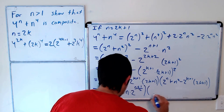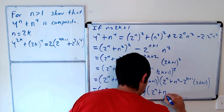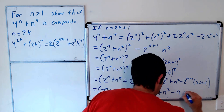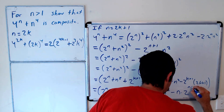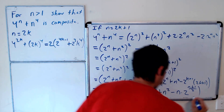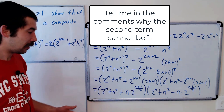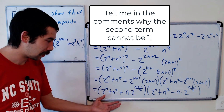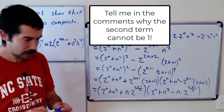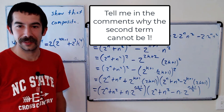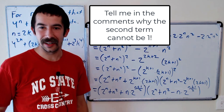And the same thing but with a negative sign. The last thing we should check is that both of these factors are bigger than 1, but that's not hard to check. And there you have it. Thanks for watching — let me know what you think. See you later.